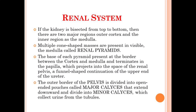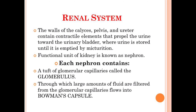The walls of the calyces, pelvis, and the ureter contain a contractile element that propels the urine towards the urinary bladder from the ureter, where the urine is stored until it is emptied by micturition. The ureters are the passages through which urine is transported to the urinary bladder, and this transport is facilitated by the presence of contractile elements. The functional unit of the kidney is the nephron.